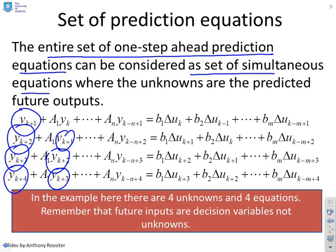Here's the example. We've got four unknowns, four equations, and you're reminded that all these future u's are not unknowns. They're decision variables. They're things that you are going to choose.